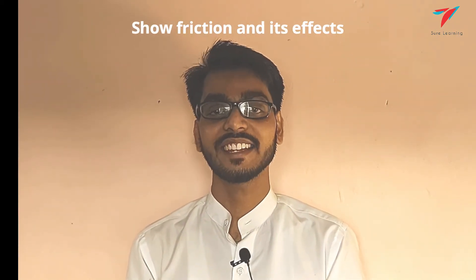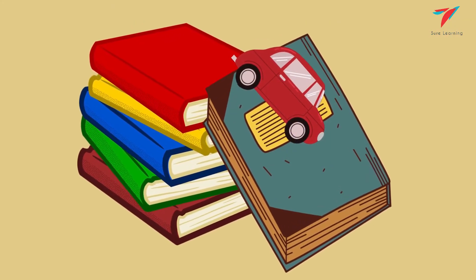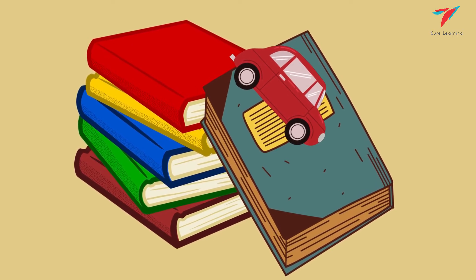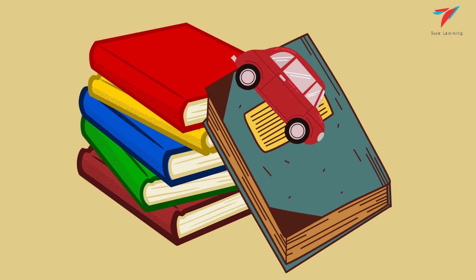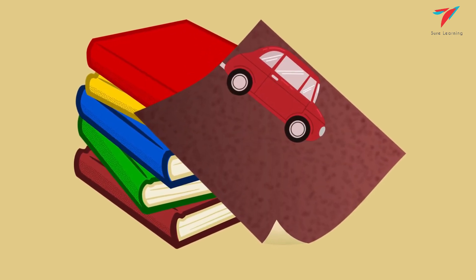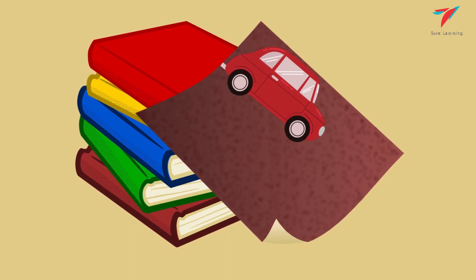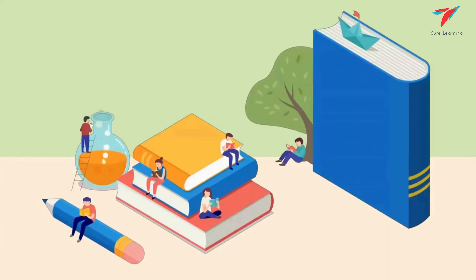Step five: show friction and its effects. Make a ramp with the help of a book and put a car on top of it; record the time taken by the car to come down. Make another ramp with sandpaper and put a car on top of it; record the time taken to come down. Compare the time in both cases and discuss the reason.